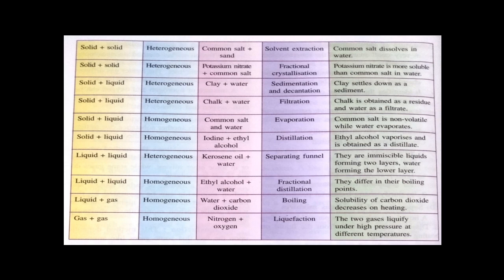In fractional crystallization, where potassium nitrate is more soluble: first, we make a saturated solution of potassium nitrate, common salt, and water, and then we cool down the solution. When we cool the solution, as potassium nitrate is more soluble, it will crystallize out first from the solution. We have to repeat the process several times to get all the potassium nitrate from the solution. Then we can get the common salt remaining.